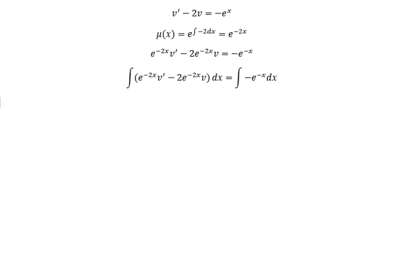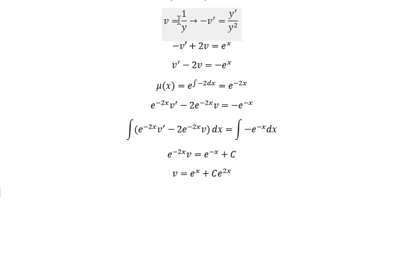Now we can get the final answer. We have e to the power of negative 2x times v, and we have C as a constant. We divide both sides with e to the power of negative 2x. About v, we got 1 over y.